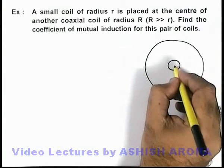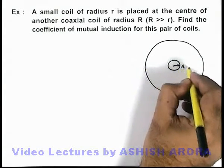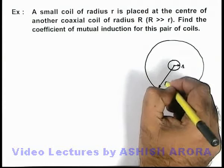which are placed in such a manner that inner coil is of radius r and outer coil is of radius capital R.